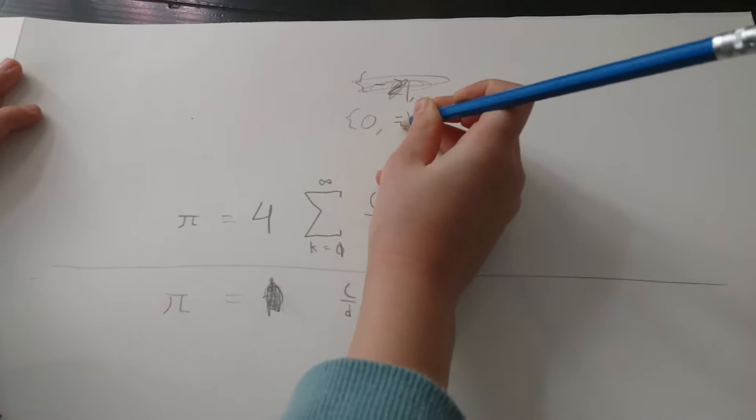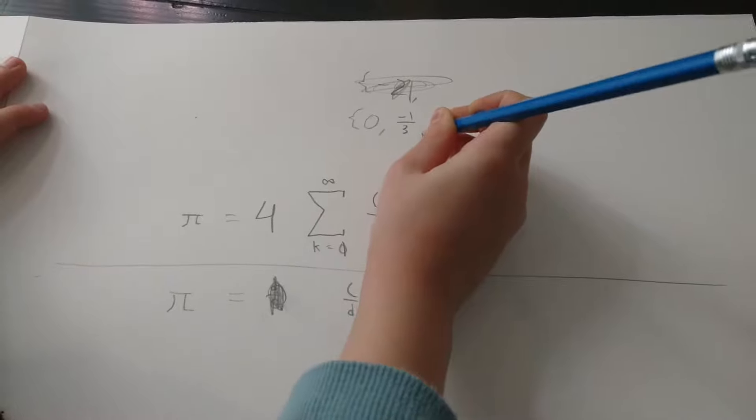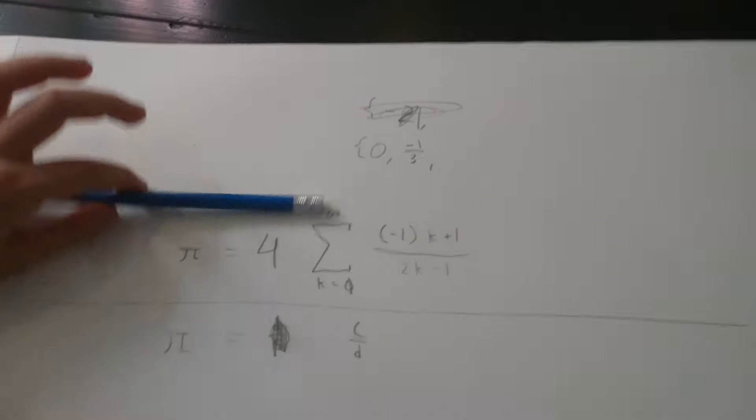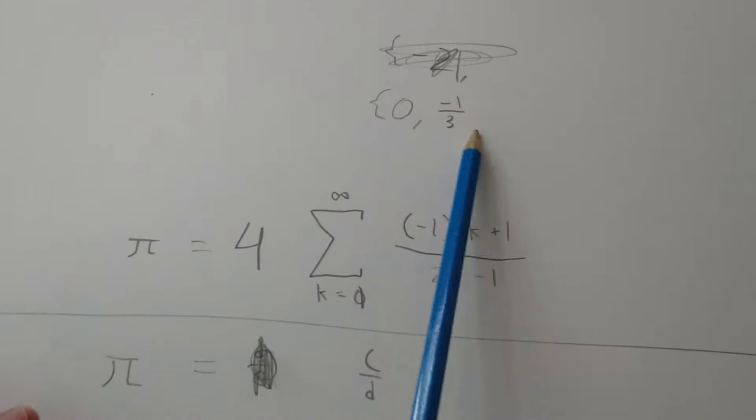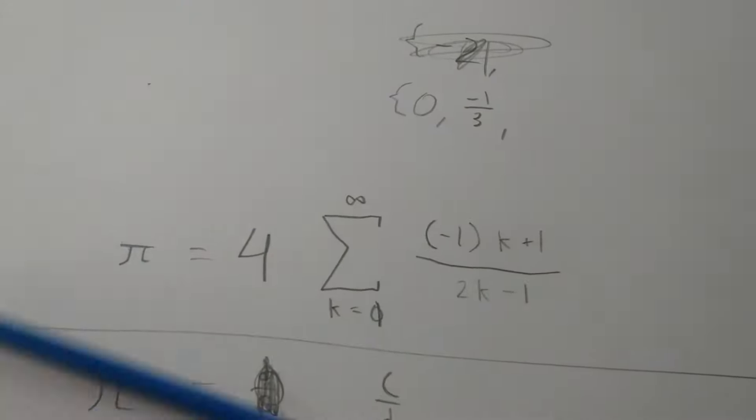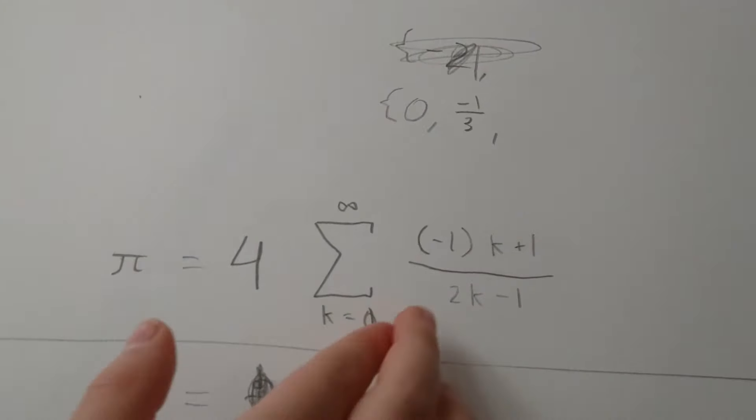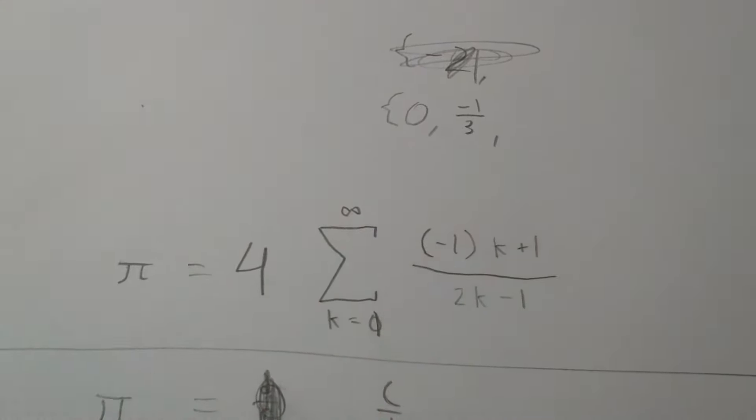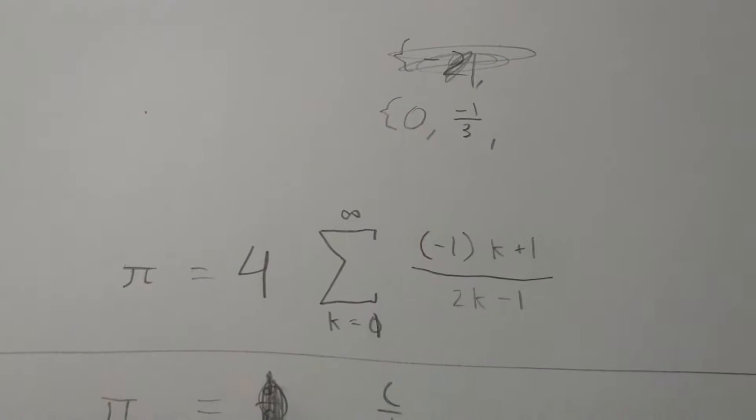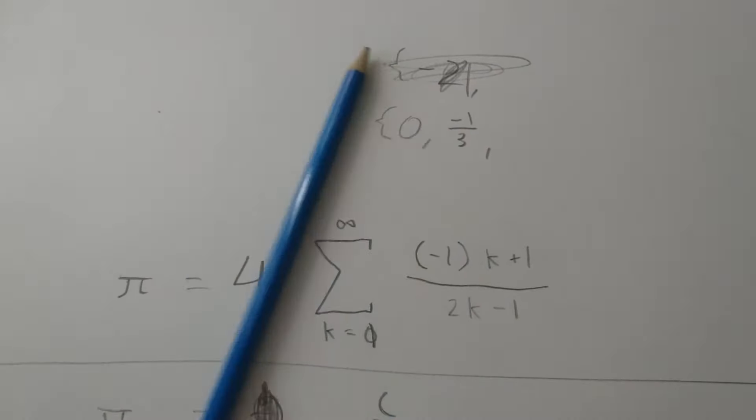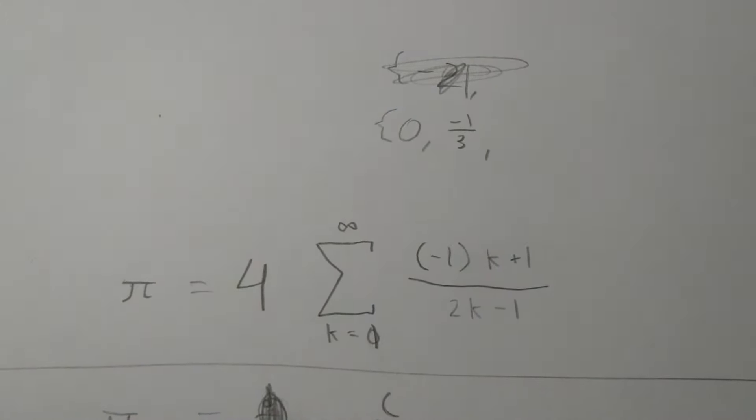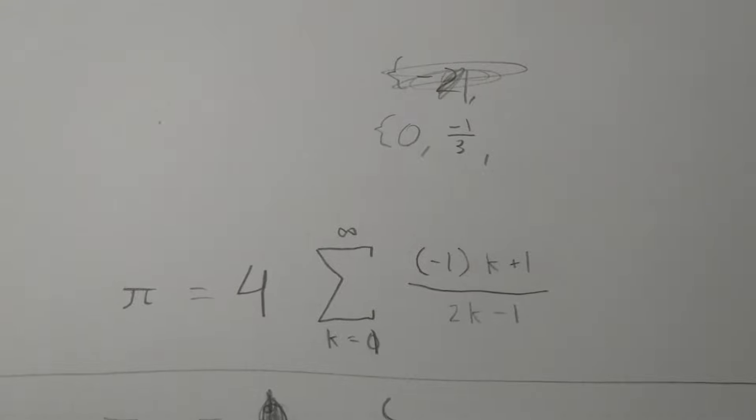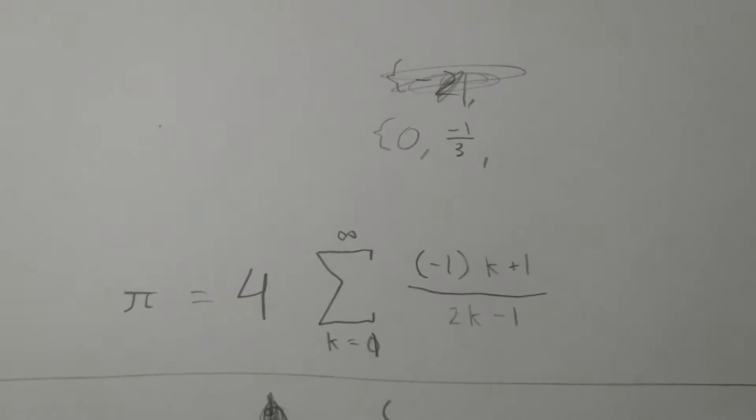And then we're going to have the third term in the sequence. So the third term, which is negative one k plus one, so for k equals three, negative one k is negative three, plus one is negative two.